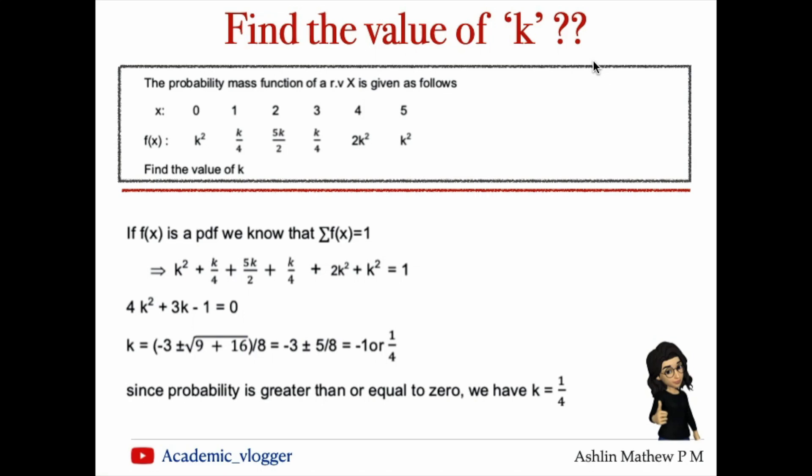From 12k/4, we get 3k. Therefore, the quadratic equation is 4k² + 3k - 1 = 0.